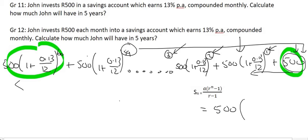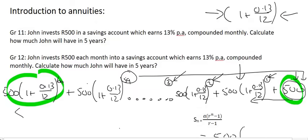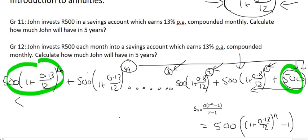R is going to be the common ratio, which we said was (1 + 0.13/12)^(n-1). And that's all over R, which is (1 + 0.13/12) minus 1.